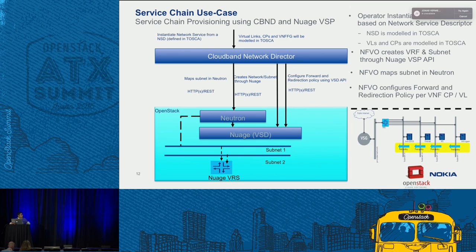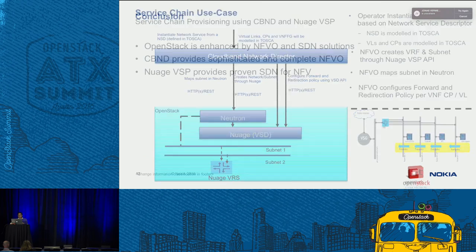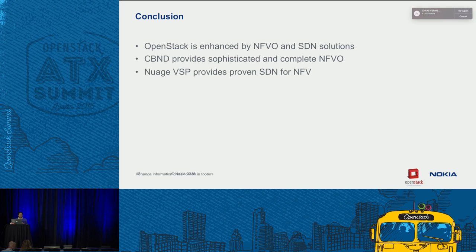The last slide shows the service chain we achieve: a chain of VNFs where the arrows show how packets flow. Whenever a packet is destined for an end destination, Nuage intercepts the packet, applies a forwarding policy, and routes it through the different VNFs. In conclusion, OpenStack is enhanced by NFV and SDN solutions. We use OpenStack as the NFVI layer and use Nuage as an ML2 plugin for OpenStack to achieve our SDN solutions. CloudBand Network Director is the NFV orchestrator, deploying VNFs via underlying VNF managers, using SDN from Nuage and Neutron to realize external and internal networking and establish end-to-end connectivity.